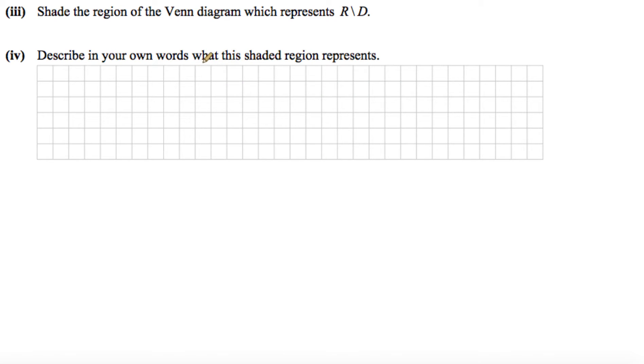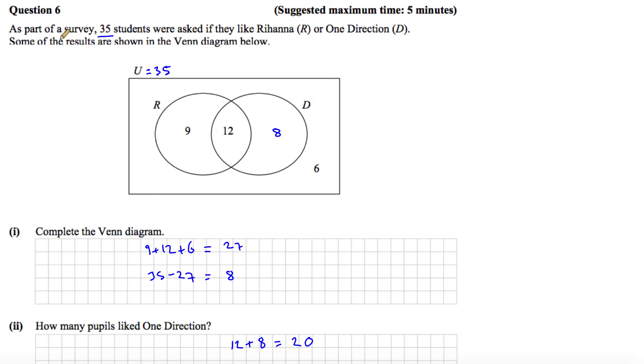Part 3 says shade the region of the Venn diagram which represents R\D. This symbol here, this backslash means R less D. So that means everything that's in R but not in D. So if we go back here and we shade that region in, that would be everything that's in R but not in D, which would be this region here.